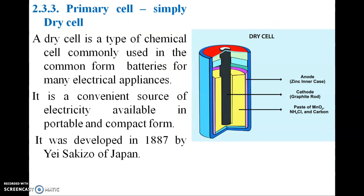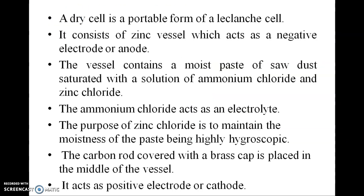A primary cell (dry cell) is designed with a zinc inner case as the anode, a graphite rod as the cathode, and a paste of MnO₂. These were developed by Yai Sahiso of Japan in 1887. A dry cell is a portable form of the Leclanché cell. It consists of a zinc vessel acting as the negative electrode or anode. The vessel contains a moist paste of sawdust saturated with a solution of ammonium chloride and zinc chloride. Ammonium chloride acts as the electrolyte, while zinc chloride maintains the moistness of the paste due to its highly hygroscopic nature.